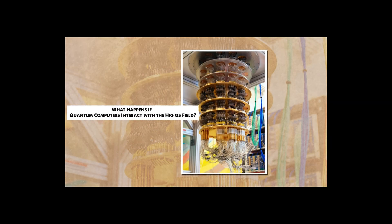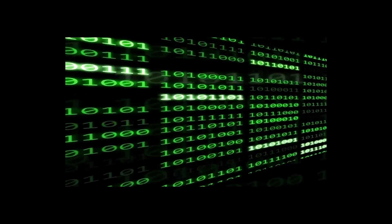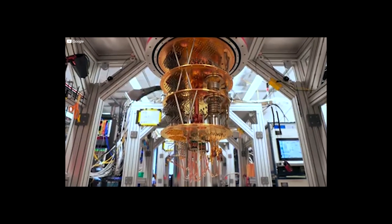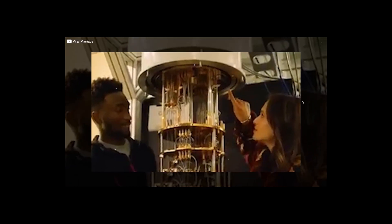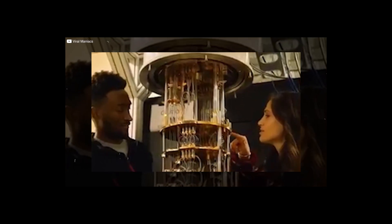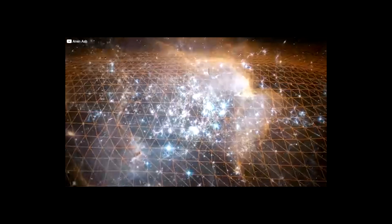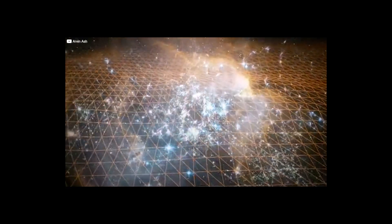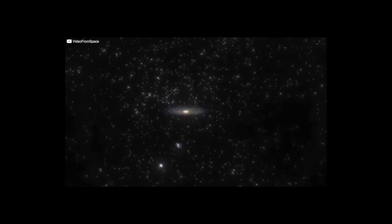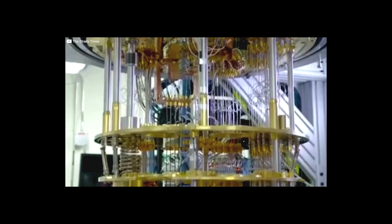What happens if quantum computers interact with the Higgs field? Imagine for a moment that quantum computers aren't just crunching numbers. What if they're interacting with something far deeper, the very fabric of reality? If quantum systems can manipulate the Higgs field, the consequences could be beyond anything we've ever imagined. The Higgs field controls mass. It gives particles their weight and shapes the universe as we know it. So what happens if we can control that? First, think about energy.